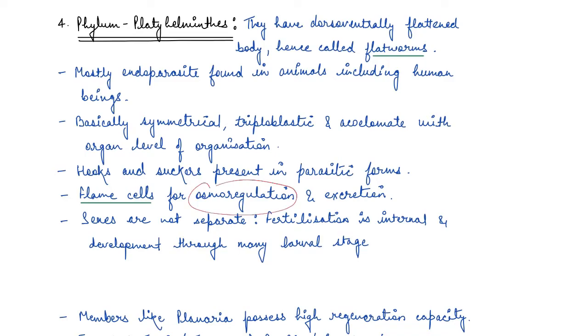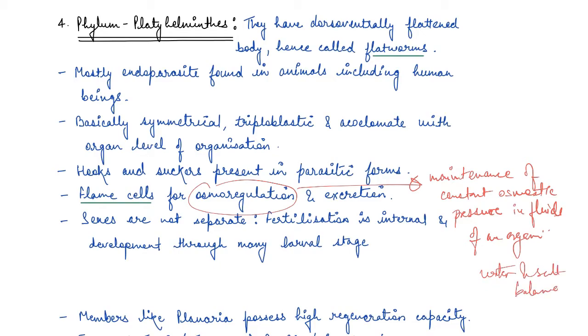They have flame cells for excretion and osmoregulation. Osmoregulation is maintenance of constant osmotic pressure in fluids of an organism by maintaining the water and salt balance. They have specialized cells which are flame cells which helps in osmoregulation and excretion. Again here the sexes are not separate so they are hermaphrodite. However, fertilization is internal and development is indirect through larval stage.